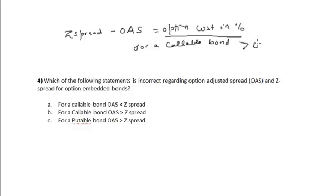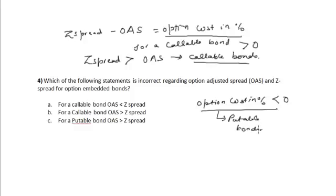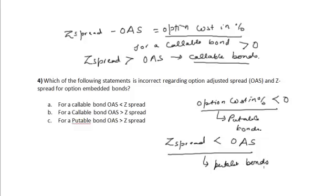For a callable bond, the option cost in percentage is greater than zero, so the Z-spread is greater than the option adjusted spread. However, in the case of putable bonds, the option cost in percentage is less than zero.